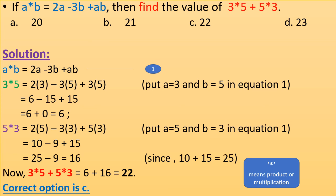For 5∘3, put a equals 5 and b equals 3 in the equation: 2 times 5 minus 3 times 3 plus 5 times 3 equals 10 minus 9 plus 15 equals 16. Therefore, 3∘5 plus 5∘3 equals 6 plus 16 equals 22. The correct option is C.